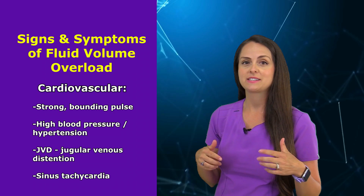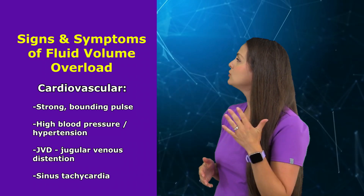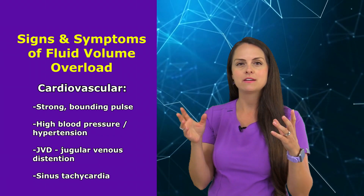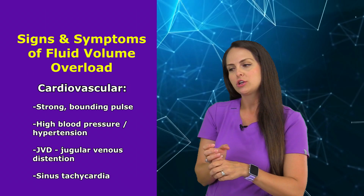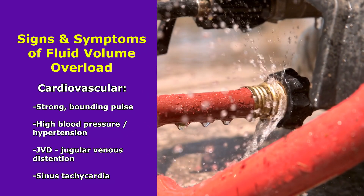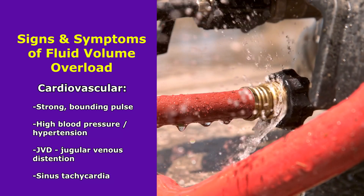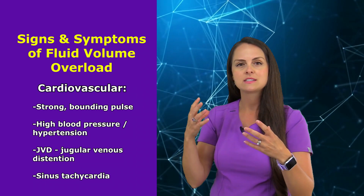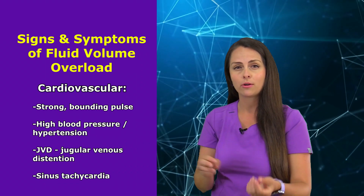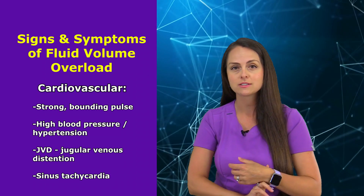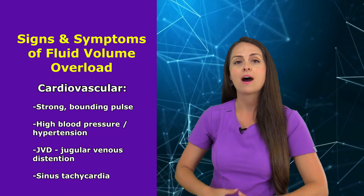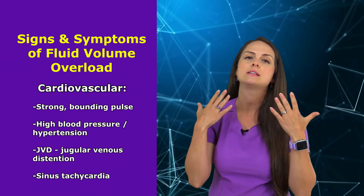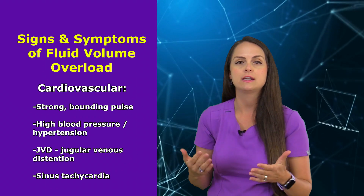Moving to the cardiovascular system: this system has a lot of fluid in it and can become overwhelmed quite easily. Think of it like a water hose — if we have a lot of water in it, there's going to be a lot of pressure. Similarly, if you have a lot of fluid in that system, you'll have a very strong bounding pulse, high blood pressure — hypertension — distended jugular veins (JVD), and sinus tachycardia.